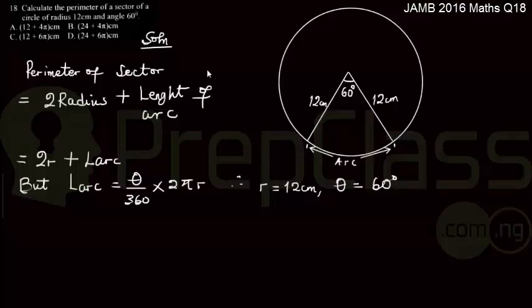According to question number 18, calculate the perimeter of a sector of a circle of radius 12 cm and angle 60 degrees. This is a pictorial representation of such a circle.